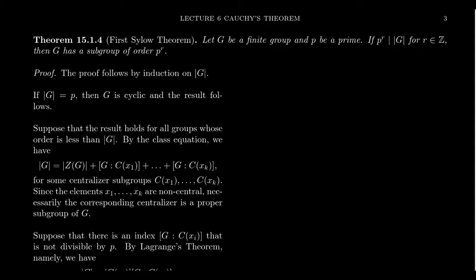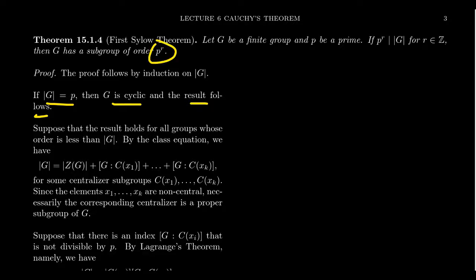So how does the proof go? Like Cauchy's theorem, it's going to be proof by induction on the order of G. If you have the trivial subgroup, this statement we're trying to prove is vacuously true. If the order of the group is a prime, then the group is necessarily cyclic, and this statement is true for cyclic groups because for a cyclic group you have a unique subgroup for every divisor of the order of the group. So then we're going to proceed by induction. The induction hypothesis will be that all groups whose order is less than the order of G — we assume the result holds for them.